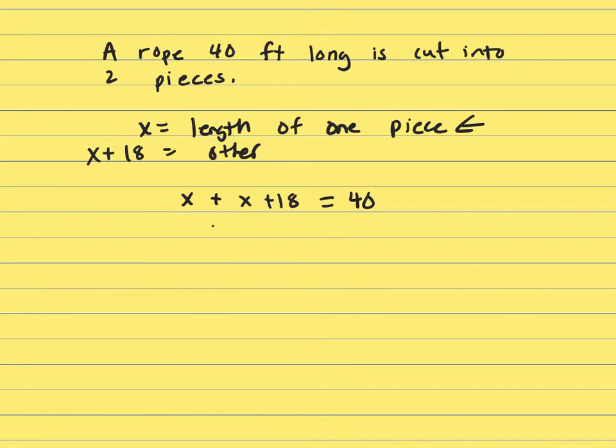So, that's 2X plus 18 equals 40, and 40 minus 18 is 22, so 2X equals 22. Divide both sides by 2, X equals 11. So the answer is B.